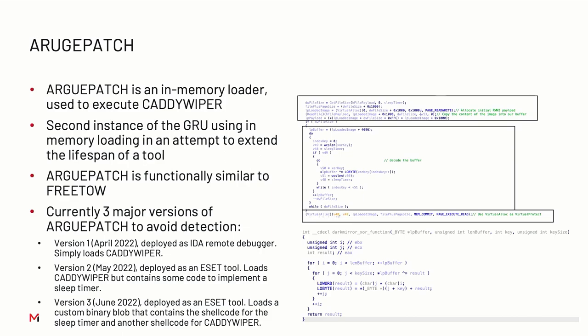There were three major versions of AggiePatch. The first in April was pretty basic - just read the file from disk, decoded it, and ran it. Then literally the following month there were two more. The second had a sleep timer so they could coordinate wipes - setting a midday wipe time while starting the tool at 9 a.m. The third version was essentially the same but instead of the sleep logic in plain text, it was shellcode: an encrypted shellcode blob with a key associated with it. They enumerated values in the blob to load first the sleep timer, and once the sleep finished, loaded CaliWiper and executed it.